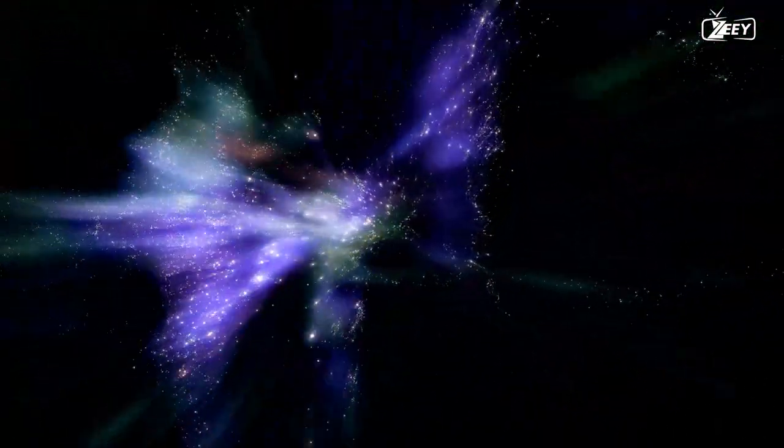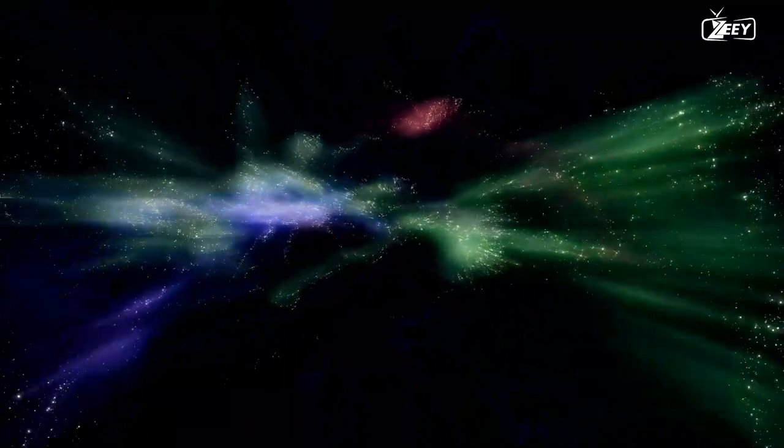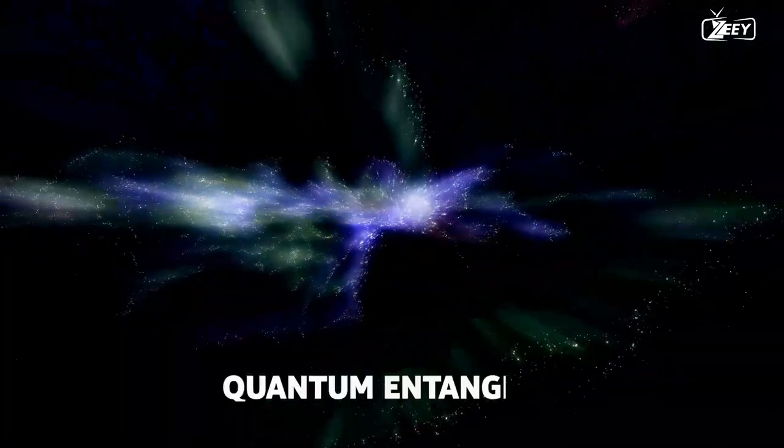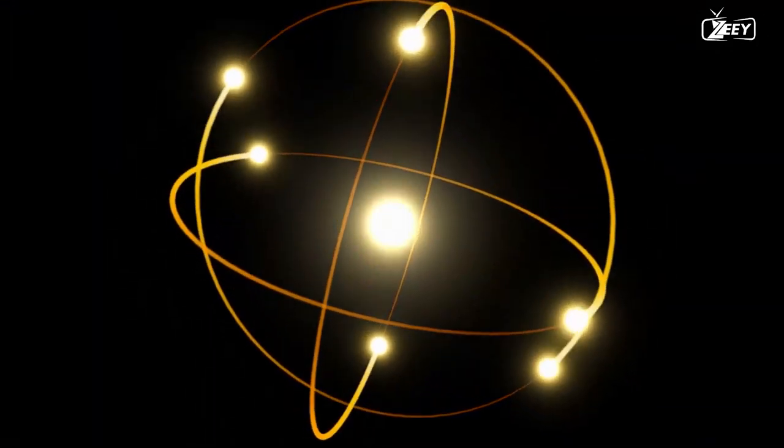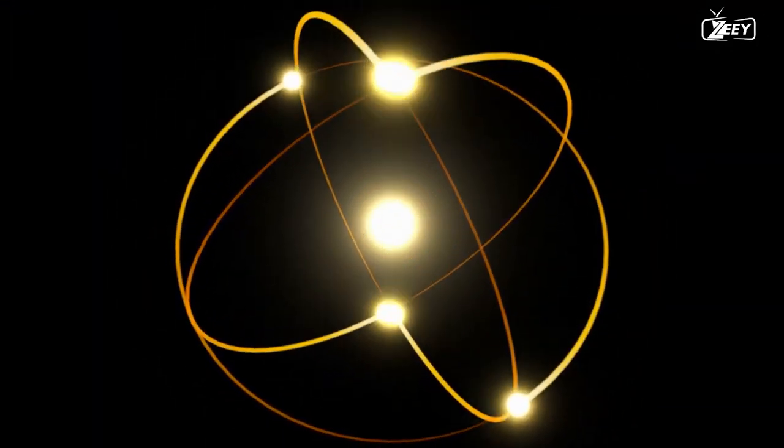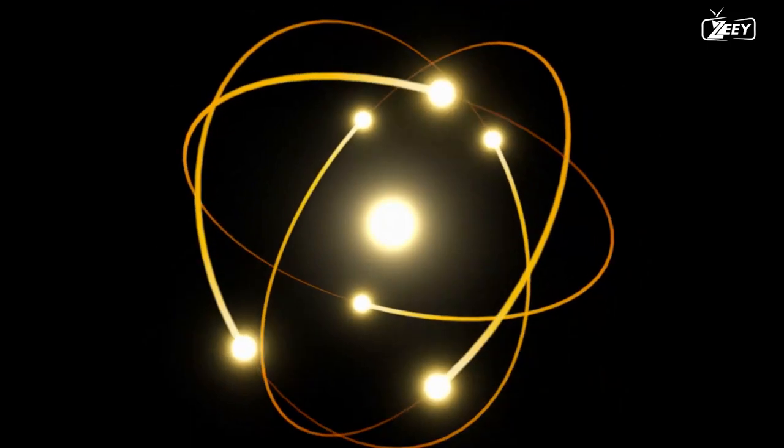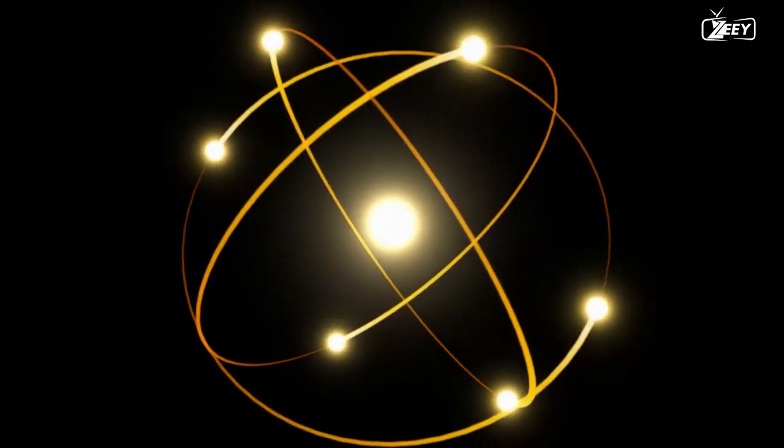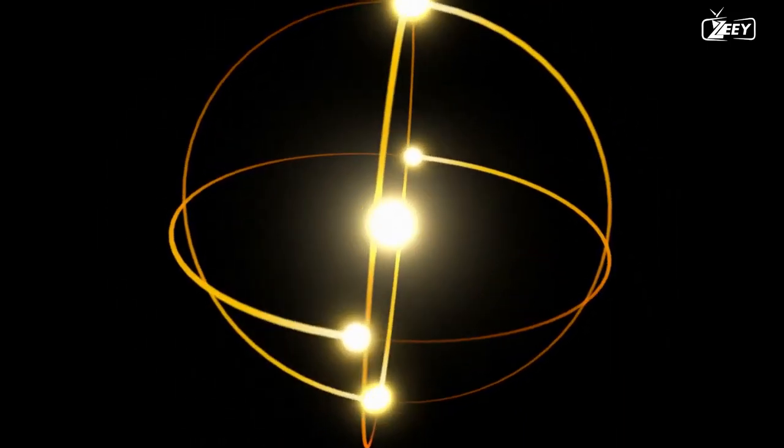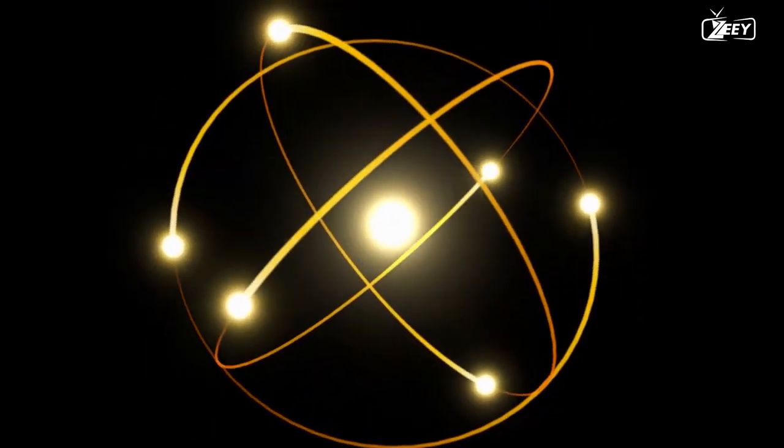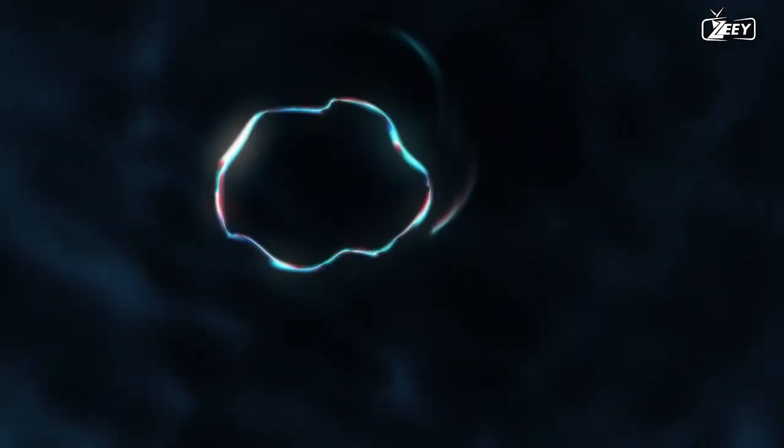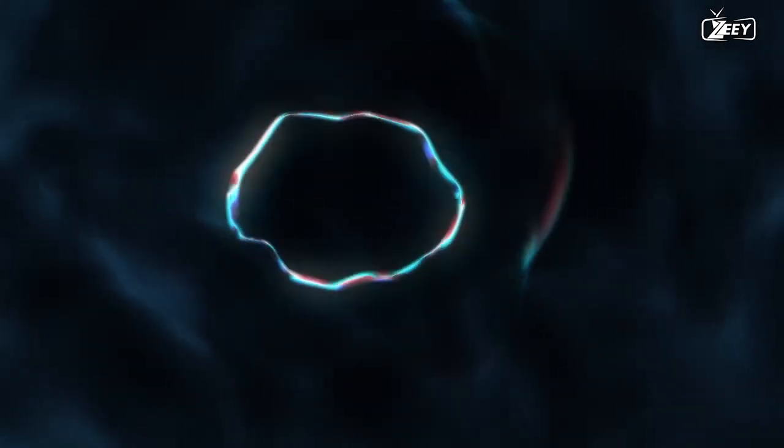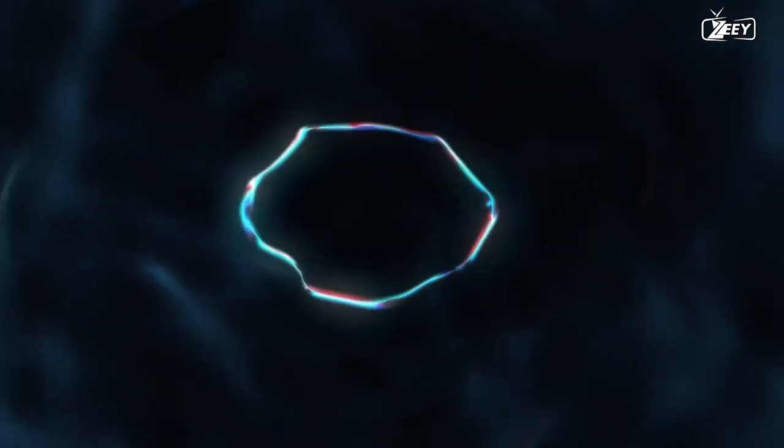But first, we must comprehend quantum entanglement. When a parent particle with zero spin decays, two particles are produced. Because spin is a conserved quantity, it cannot change, and hence the daughter particles have opposing spin. Spin is a feature shared by all fundamental particles in the universe.